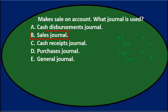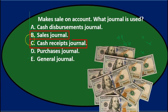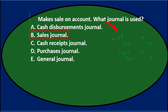B. Sales journal — we did make a sale, so that's a possibility. C. Cash receipts journal — we made the sale but didn't get cash yet, so it won't go there. D. Purchases journal — we didn't purchase anything, we made a sale, so that doesn't fit. E. General journal — the default. It's down to B or E. This fits into the sales journal. The key distinction: if the sale was for cash it goes in the cash receipts journal; if on account (accounts receivable), it goes in the sales journal. Final answer: Makes sale on account — what journal is used? B. Sales journal.